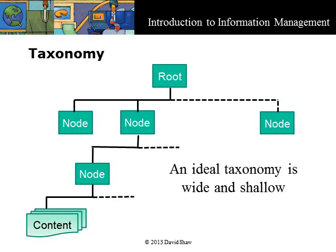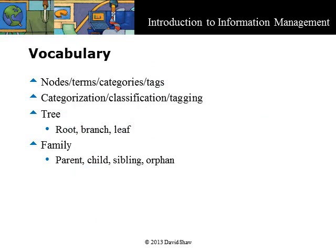It is a mistake to think there is only one perfect taxonomy for the information in your organization. Nodes can also be called terms, categories, or tags, and the process of using them can be called categorization, classification, or tagging. Nodes are organized in an inverted tree, as shown in the previous screen, with a root node at the top. Sometimes we also say that a node has a parent, a sibling, or a child. An end node is also a child node. An orphan node has no family connections to the tree. This is an indication that your taxonomy is not yet a taxonomy, and it needs more thought and work.